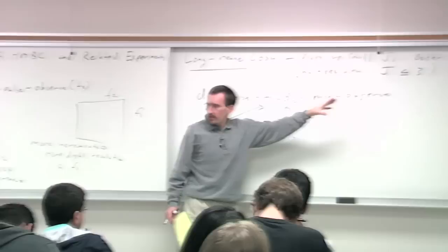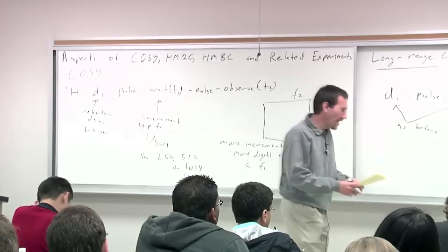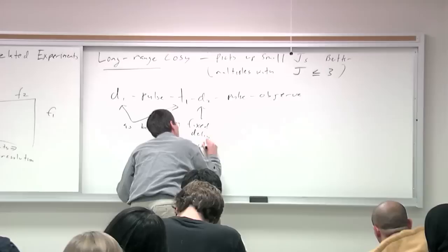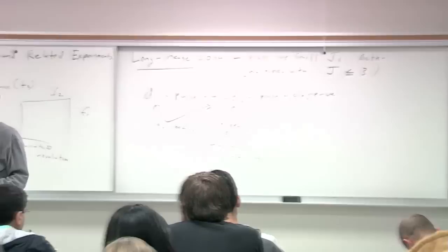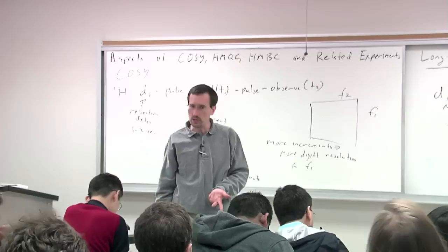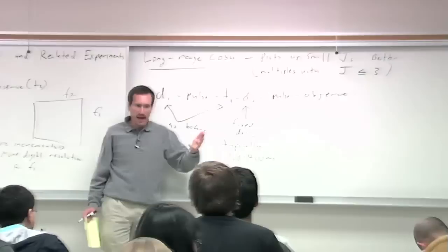A long-range COSY adds an extra fixed delay — D2 — that gives these small J's better visibility. The sequence is D1, pulse, T1 as before, but now you add one more fixed delay D2, then pulse and observe. The fixed delay is typically 100 to 400 milliseconds; longer is better for picking up small J's, but there's a caveat: what's happening during those 100 to 400 milliseconds? Relaxation — so you're losing signal intensity as your magnetization returns to the Z axis.